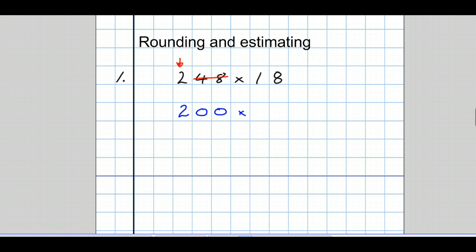What about this 18 here? I'll get rid of all the other figures, but if the first figure you get rid of is 5 or more, then the one you keep goes up by 1. So it goes up to 2. But that 1 was in the tens column, so our 2 should be in the tens column. So we add a zero to push the 2 to the left into the tens column.